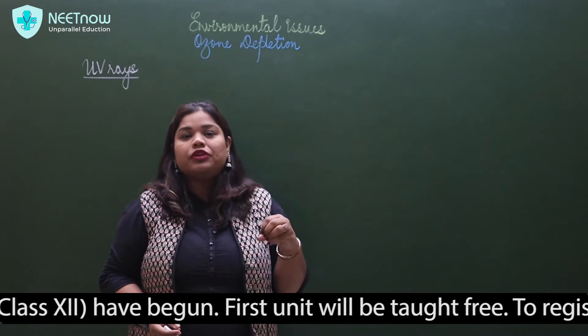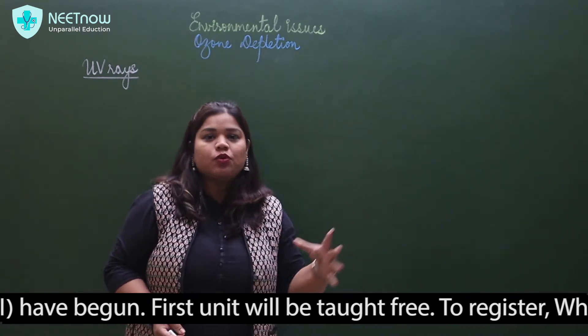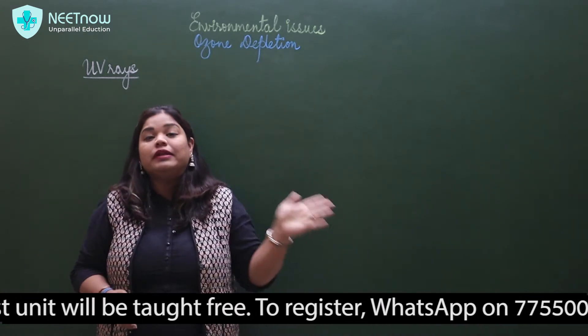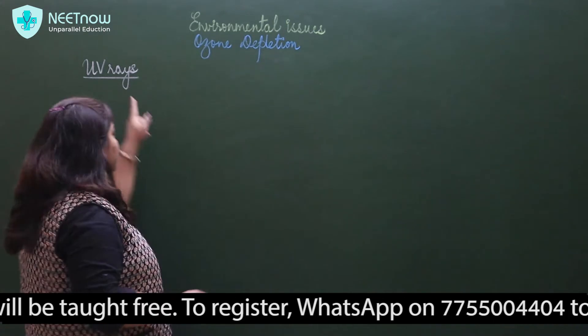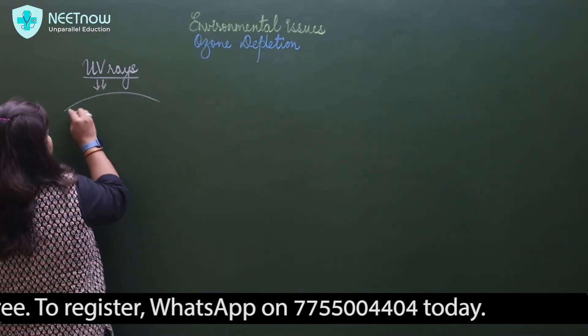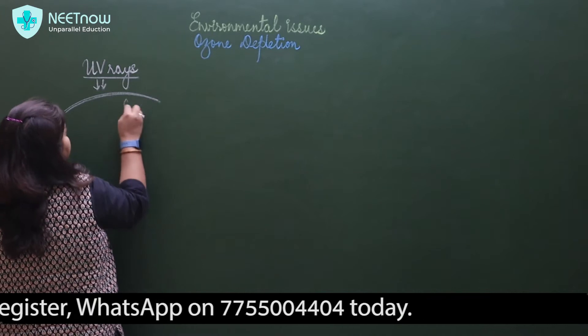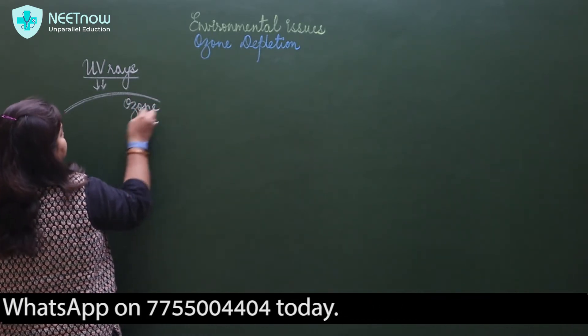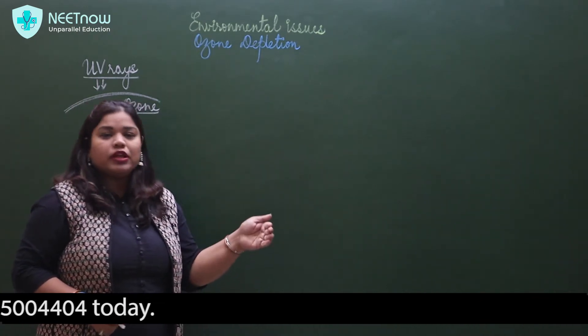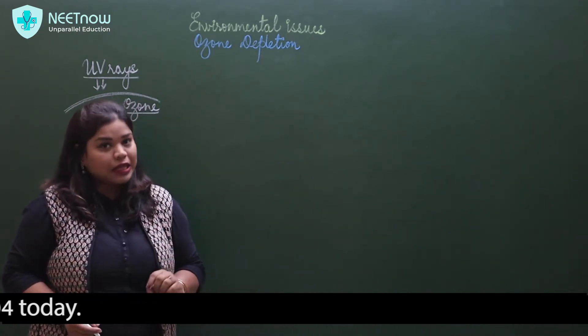The ultraviolet rays need to be filtered. What filters these UV rays? This is the ozone layer. The ozone in the stratosphere saves us from UV rays. This UV rays cannot reach us because of the ozone layer.